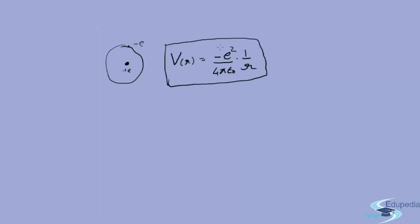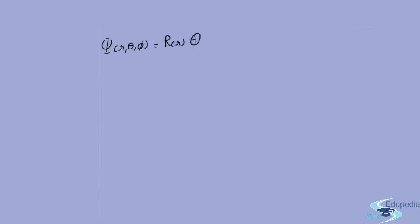The total wave function psi of R theta phi which we need to find is equal to R of R times theta of theta times phi of phi. We already know theta of theta equals a constant A times P_L^M of cos theta, and phi of phi equals e to the power iota M phi. We already know some constraints: L and M are integers, and M equals 0, plus minus 1, plus minus 2 till plus minus L, meaning mod M is less than or equal to L.